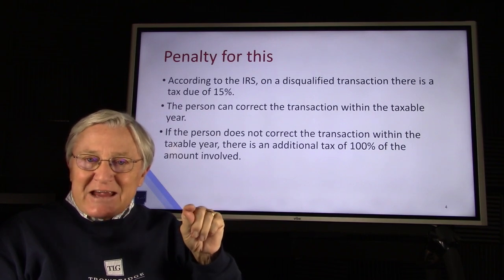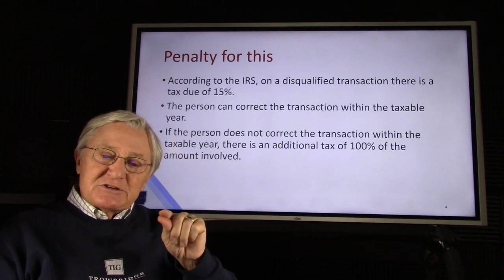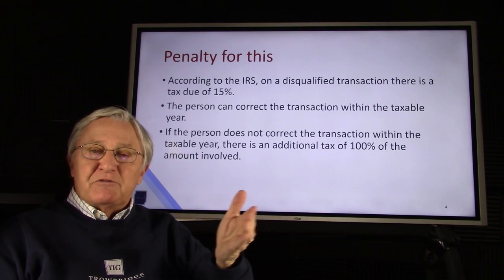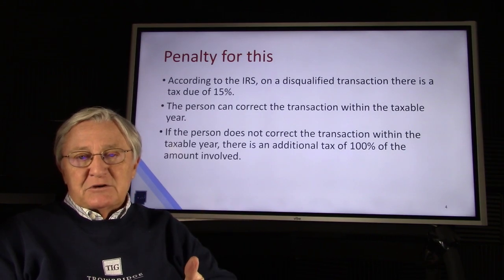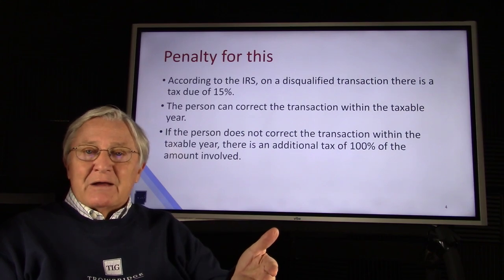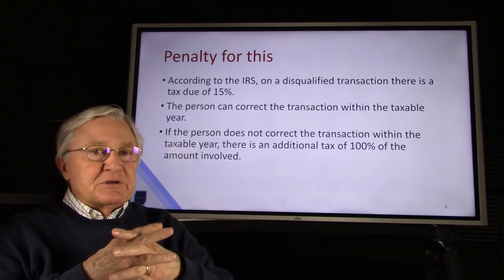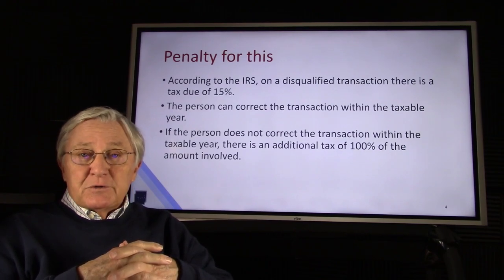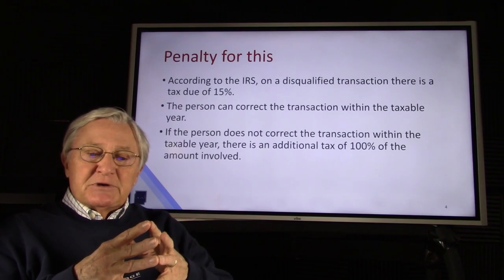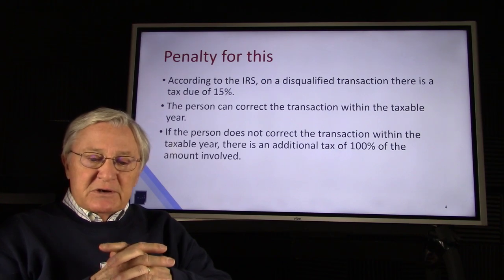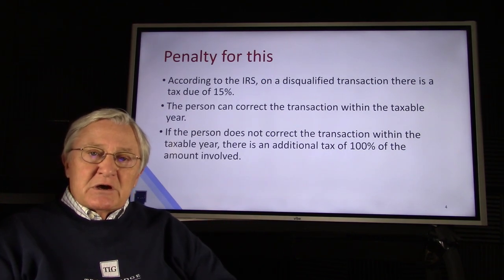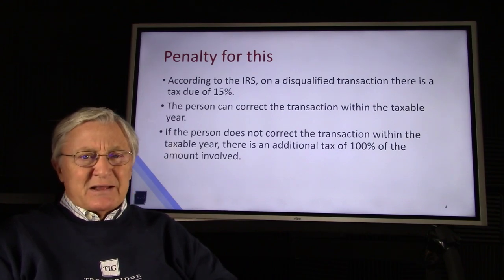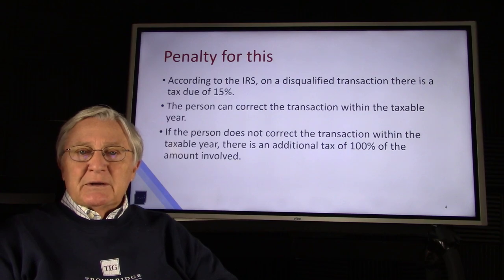But you have that tax year to correct that transaction. Meaning if you were to wait till January and you made a contribution that's more than you're allowed to make, you'd have till the end of the year to correct that — take that money out or do whatever the correction is. And if you don't correct that bad transaction within that taxable year, there's an additional tax of 100% of the amount involved. So there's a possibility you could pay 115% tax on the $10,000 that you contribute, which would be painful.